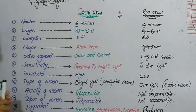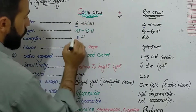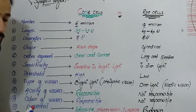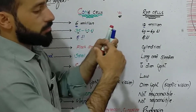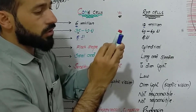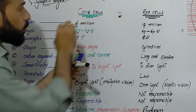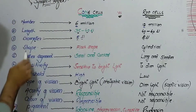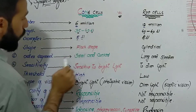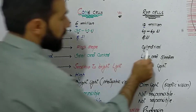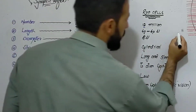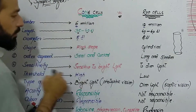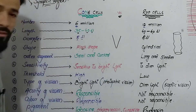The diameter of cone cells is 5 micrometers and the diameter of rod cells is 2 micrometers. This means cone cells are a little broader than the rod cells. Regarding shape, the shape of cone cells is flask-shaped and the shape of rod cells is cylindrical. Rod cells are cylindrical but cone cells have a flask shape.